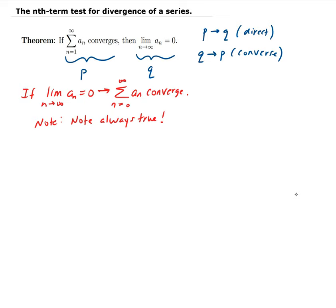For example, there's another theorem from Calc 1 saying that if the derivative exists at a point, then the function is continuous at that point. However, the other way is not true — if a function is continuous at a point, it may not necessarily be differentiable there. A good example of that is the absolute value function. We know it's continuous everywhere, but it's not differentiable at zero.